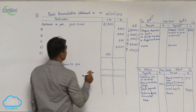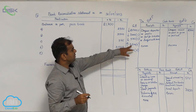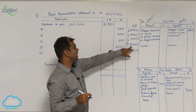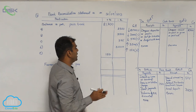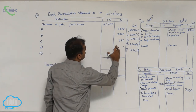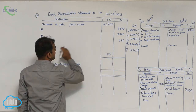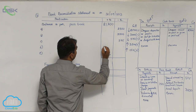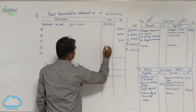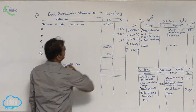I am very sorry — the previous amount of 3,500 for cheques deposited into bank should be added. I had incorrectly placed it in the minus column. I am now shifting it to the positive column.